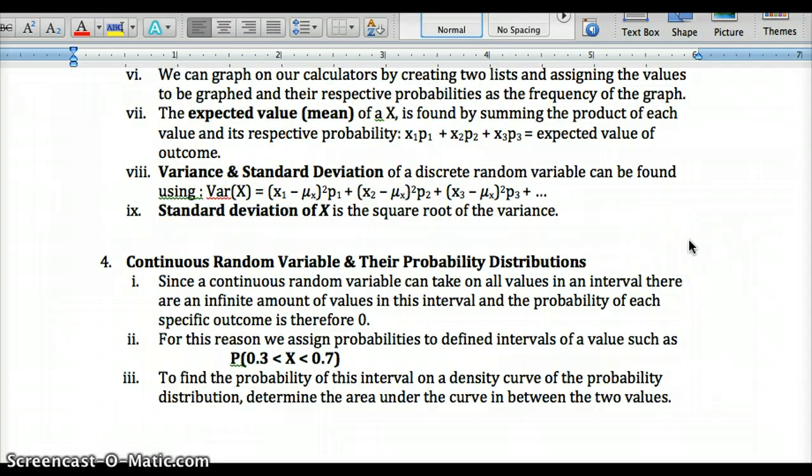Now, when you have a continuous random variable, since it can take on all values in an interval, and there's an infinite amount of numbers in between any two. So in between 1 and 1.1, there's an infinite amount of numbers. You just keep writing numbers and adding zeros. So for that reason, we have to always use an interval, because the probability of each specific outcome is 0, because there's an infinite number. So whenever we have a continuous variable, like, remember, measuring shoe length, like foot length, then we have to give an interval, and define that in the probability of the variable being in that interval. And that'd be the area under the curve in between those two.